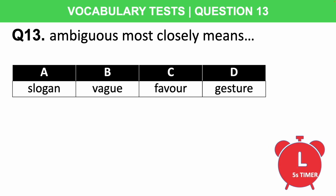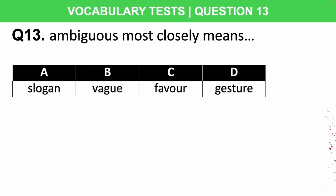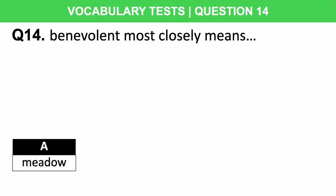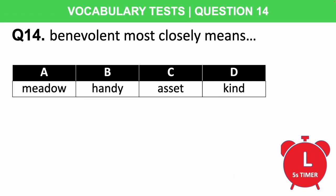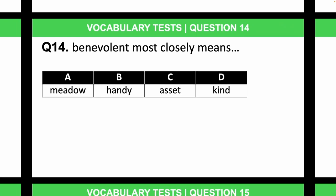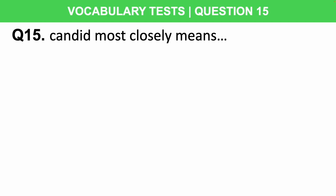Question 14: Benevolent most closely means meadow, handy, asset, or kind? Five seconds starting now. Question 15: Candid most closely means angle, suntan, immune, or honest? Five seconds starting now.